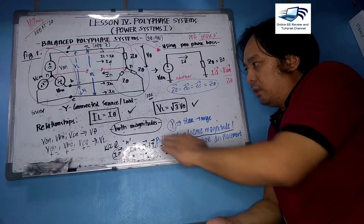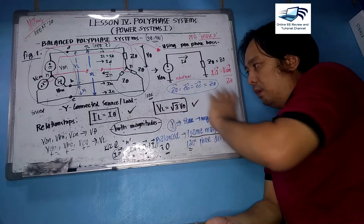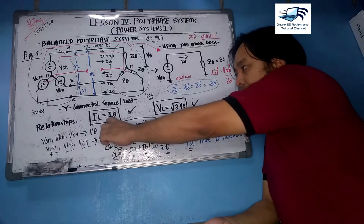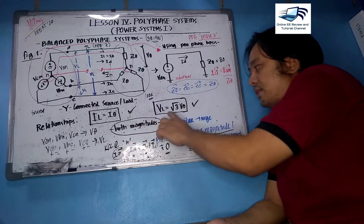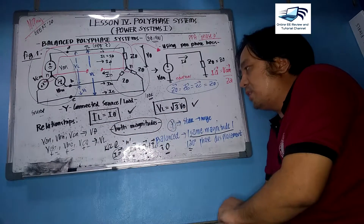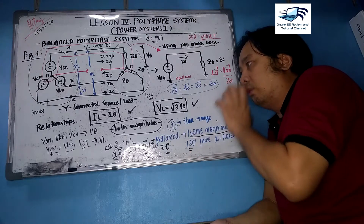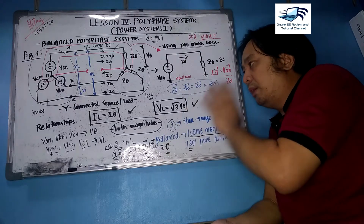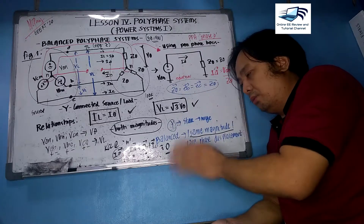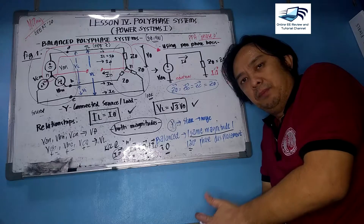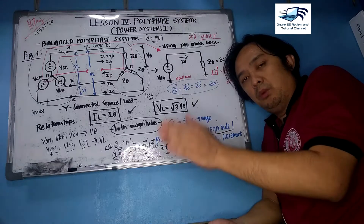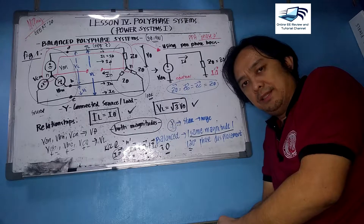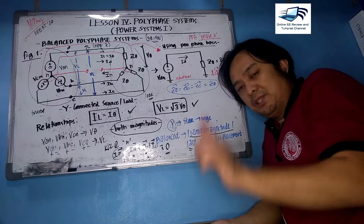To summarize for a Y-connected source and Y-connected load: IL equals I-phase, and VL equals the square root of 3 times V-phase. We will make use of this analysis when we move forward to problem solving. Next, we will discuss the delta connection.